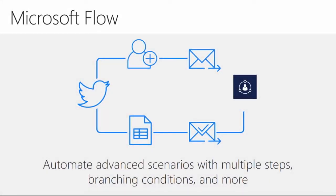Microsoft Flow is a cloud-based service for building advanced scenarios that connect applications or create business processes spanning multiple applications. These processes might include multiple steps, different branches based on what happens, and any number of situations. For example, somebody tweets something and based on the content or who tweeted it, you might do something specific within the application.